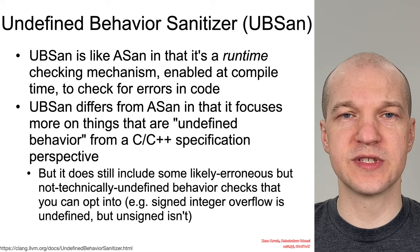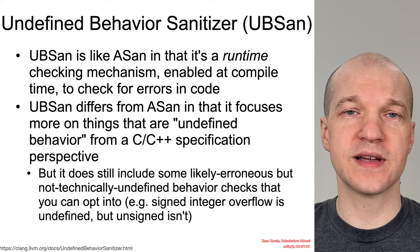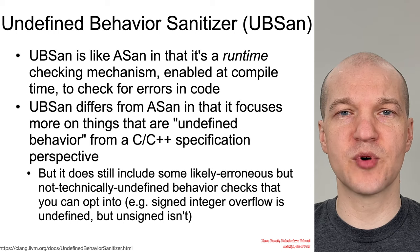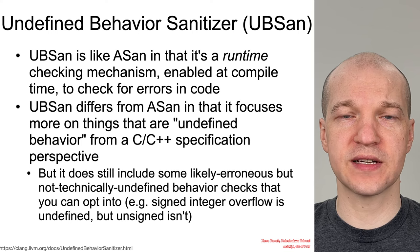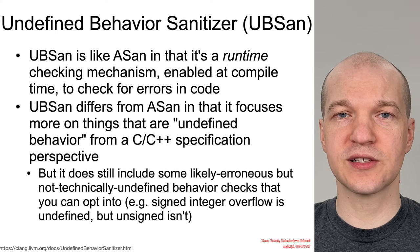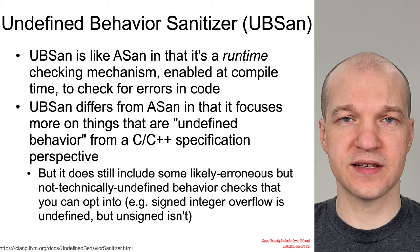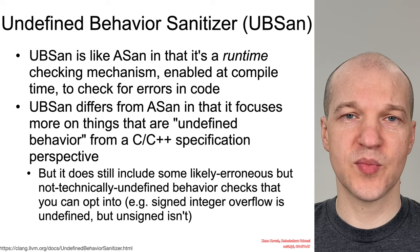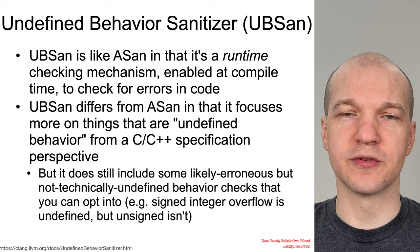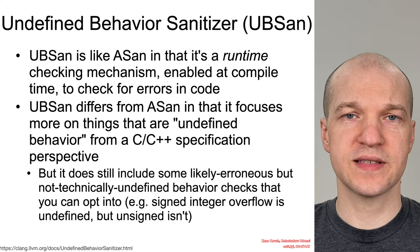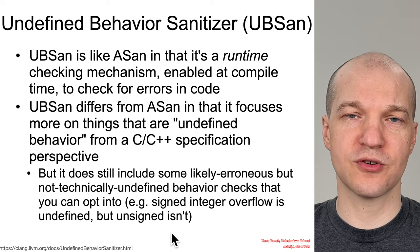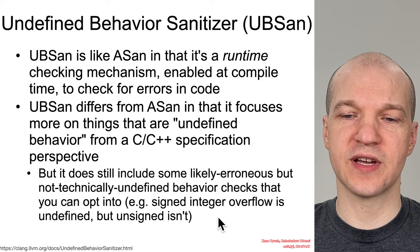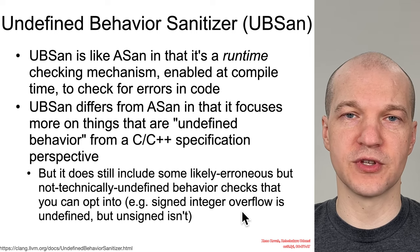The difference between UBSAN and ASAN is that whereas ASAN focuses on memory access type errors, UBSAN focuses more on what are technically undefined behaviors according to the C specification. It also includes some things that are not technically undefined behaviors but which very often lead to erroneous problems in code — things like unsigned integer overflow detection, because while unsigned integer overflow is not technically undefined, signed integer overflow is.